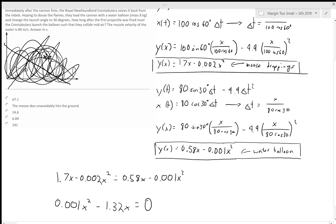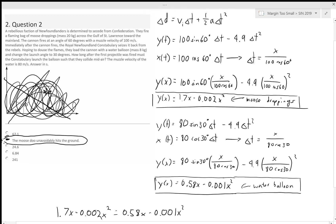Since it doesn't intersect, unfortunately the moose droppings unavoidably hits the ground. And the answer is B. Thank you.